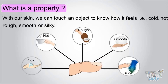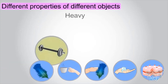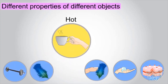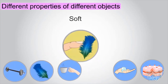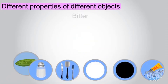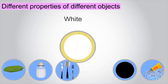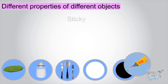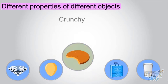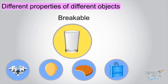Different properties of different objects can be: heavy, lightweight, hot, soft, cold, sweet, bitter, salty, sharp, white, black, sticky, shiny, yellow, crunchy, durable, and brittle.